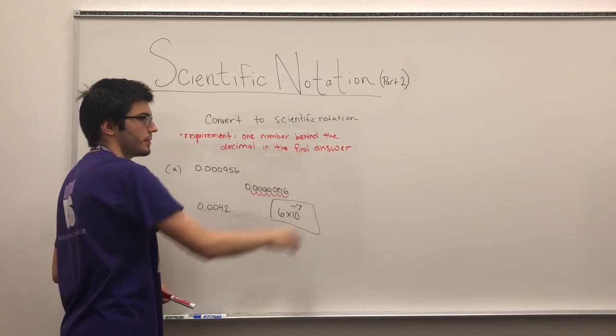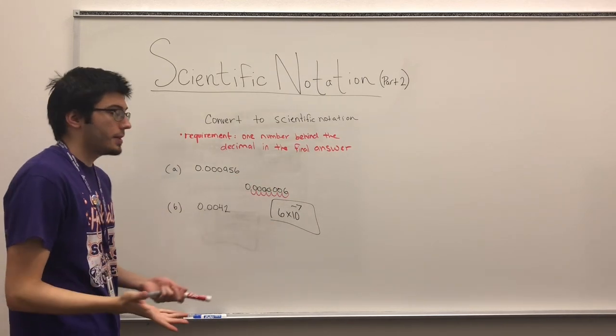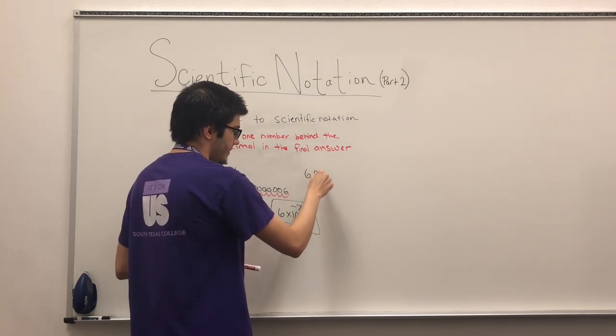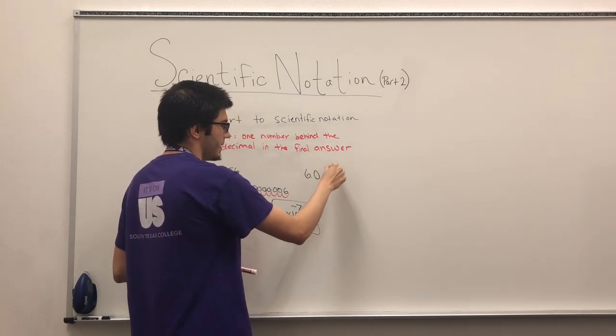What that means is that it has to be, let's say, six point zero times ten to the negative seven.